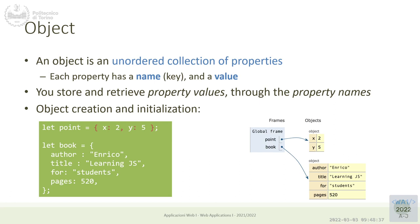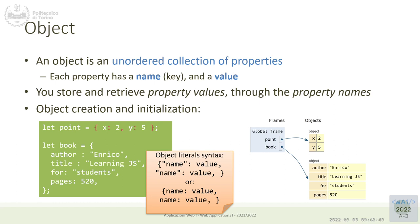The object is a value by itself that contains other values, and these values are selected through the property name. Property names can be quoted, especially if they contain characters that are not valid as identifiers — for example, a space. You can think of an object as a mapping from string to value, and you can use it as a dictionary or associative map mapping any string to a value.